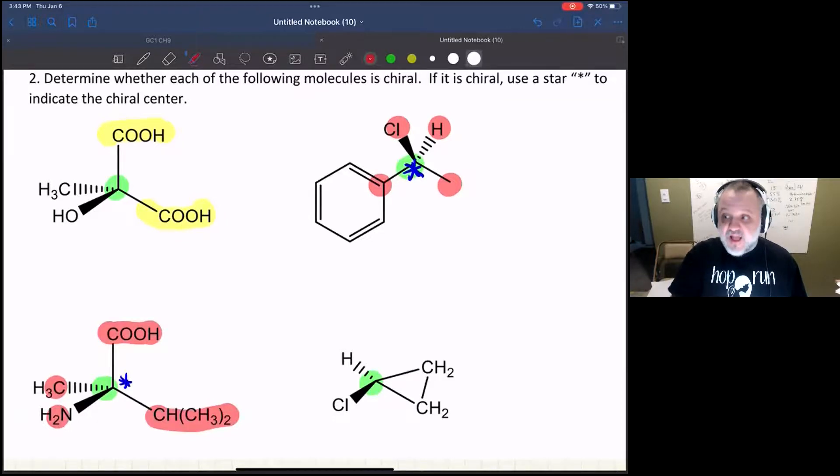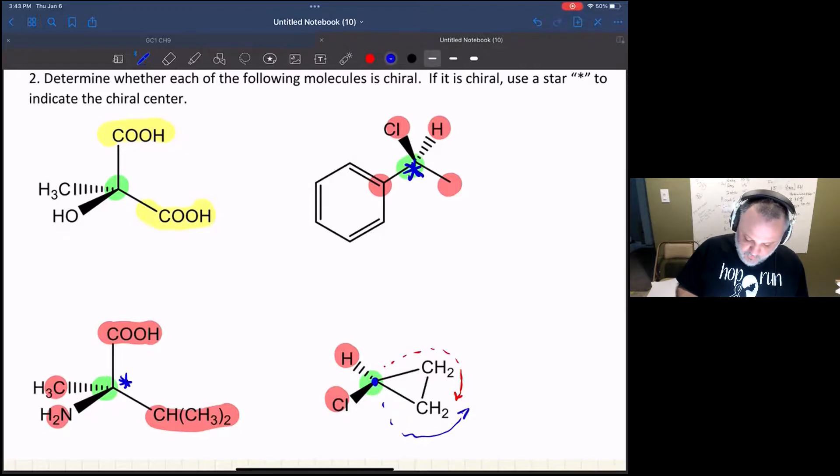Clearly these two groups are different, so we've got one, two different groups so far. Now what we want to do is think: is this different in this direction than it is in this direction? It turns out it's not. If we go from here, we go around the ring, we get to a CH2, keep going around the ring, we get to a CH2, and now we're back home.